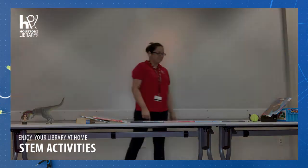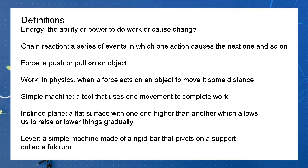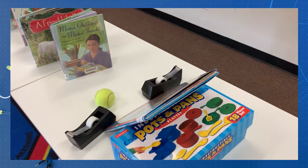Let's start with some definitions. Energy is the ability or power to do work or cause change. A chain reaction is a series of events in which one action causes the next one and so on. A force is a push or pull on an object. Work in physics is when a force acts on an object to move it some distance. A simple machine is a tool that uses one movement to complete work.